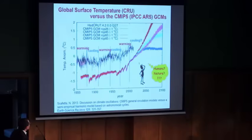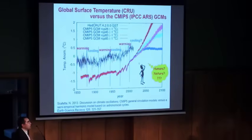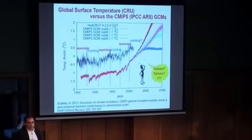But the models fail to produce all the oscillations that you see here. There is no comparison whatsoever between the data and the models. So the problem is: are the oscillations important for understanding climate change or not?